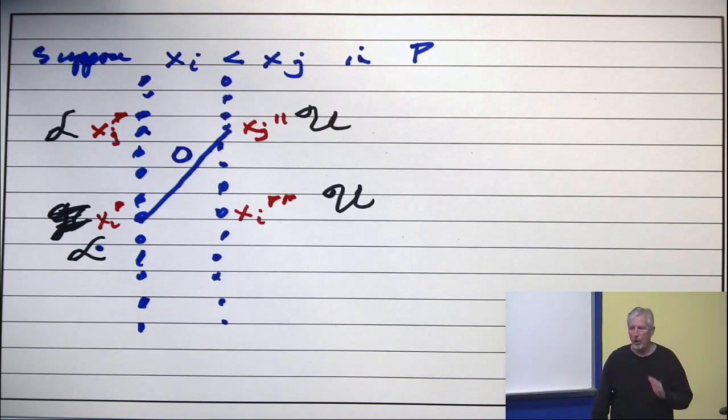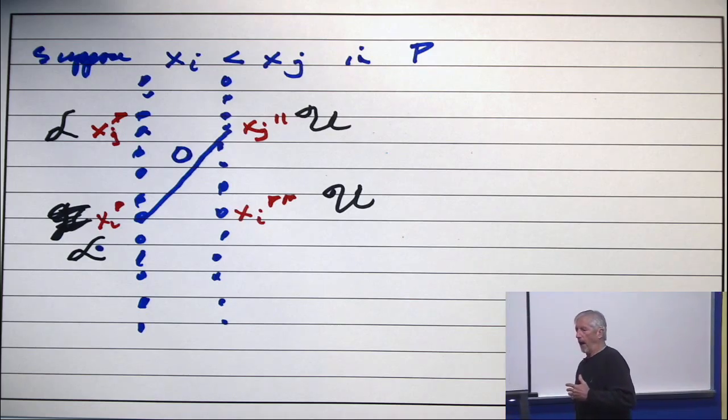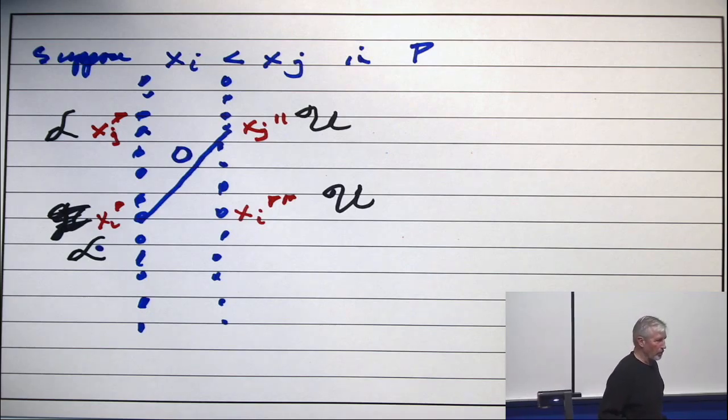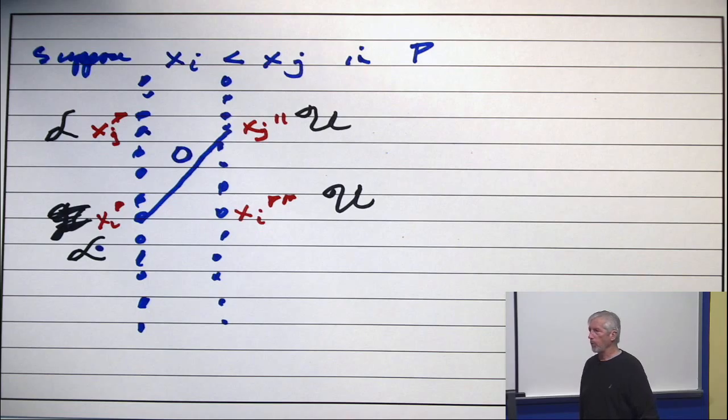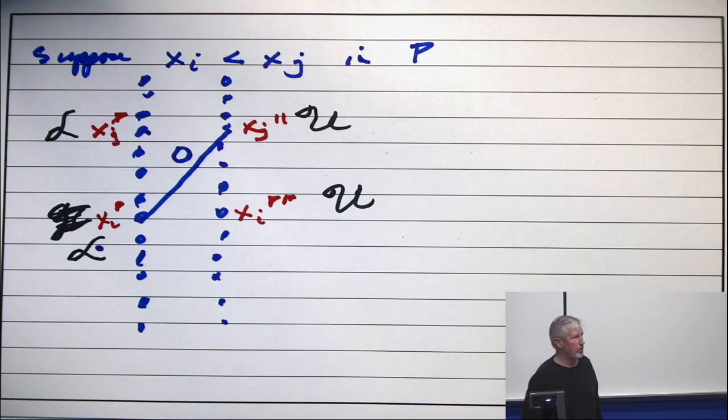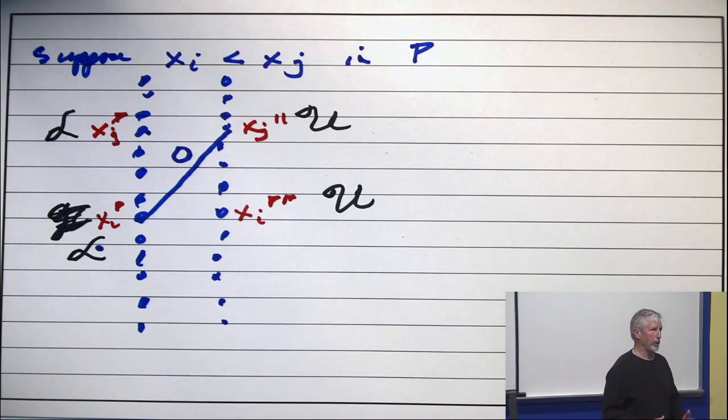So when we first studied Dilworth's theorem months ago, I commented that, and it's a repeat of the principle that I expressed a few minutes ago, that if you studied this subject 40 years ago, you would have learned about Dilworth's theorem, you would have learned that a poset of width W has a partition into W chains. The idea of how one actually finds that partition would probably have not even been on the curriculum.